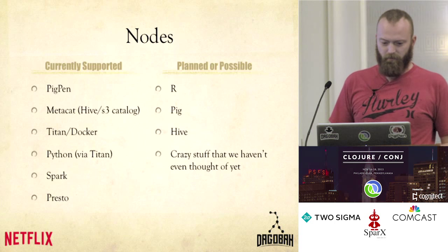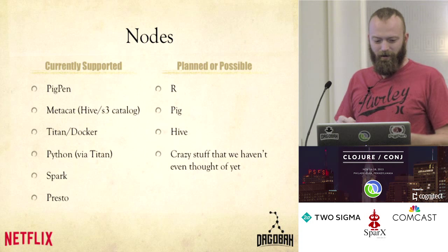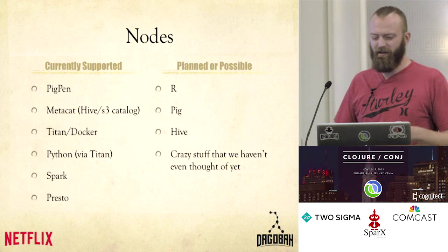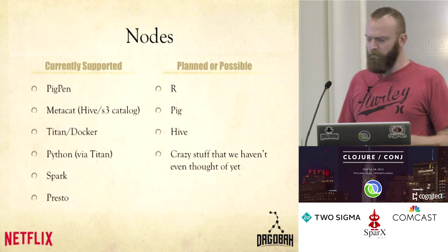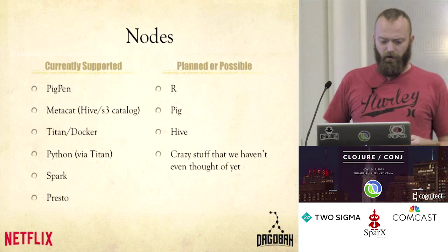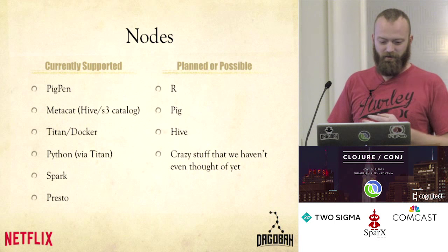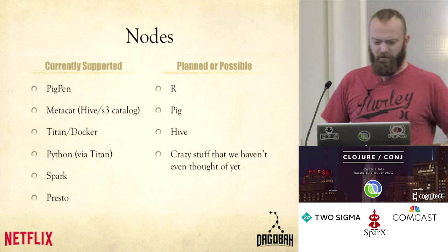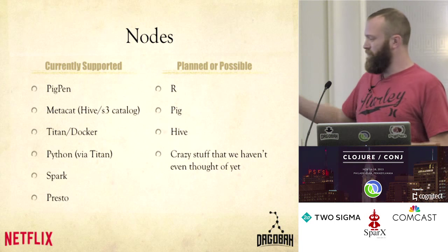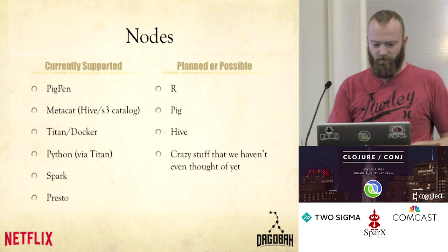So what's a node? A node can be a computation. Right now we support Pigpen, obviously. We support Metacat — it's a thing we have that's basically like metadata over S3 data; it kind of looks like a Hive table. We have something at Netflix called Titan that runs Docker images. You can run a Python script via Titan. We run Spark — everybody loves Spark in the machine learning area. And we can run Presto queries, which is like a faster version of Hive queries. Really, you could put anything into here — you have a blob of information that says go run this and you just ship it off somewhere and run it.